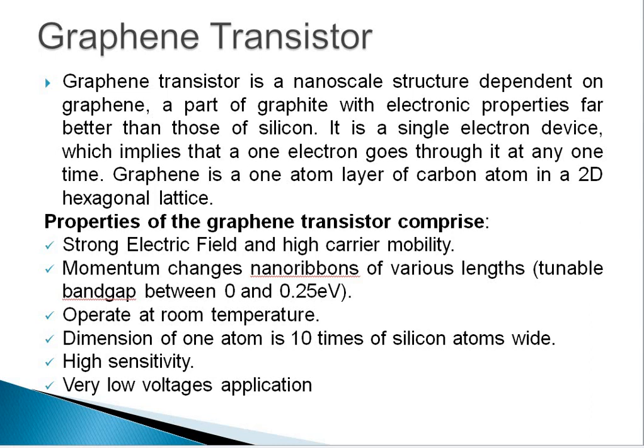Graphene transistors operate at room temperature. Their dimensions are one atom, which is 10 times the width of a silicon atom. They have highly sensitivity and can produce high-sensitivity devices. They can be used in very low voltage applications. This makes graphene transistors highly suitable for use in nanoscale devices.